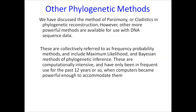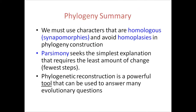Other phylogenetic methods beyond parsimony are available for DNA sequence data, collectively referred to as probabilistic methods, including maximum likelihood and Bayesian methods of phylogenetic inference. These are computationally intensive and have only become feasible in recent years as computers have become more powerful. To summarize: we must use homologous characters and avoid homoplastic ones in phylogenetic construction; parsimony seeks the simplest explanation requiring the least number of changes.